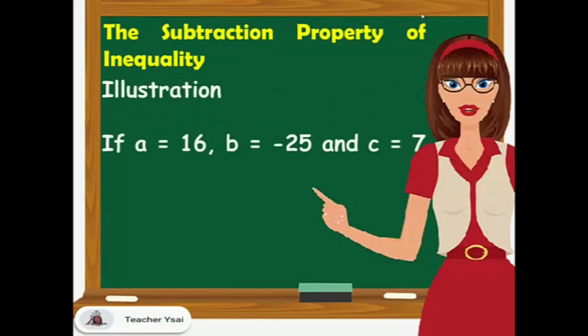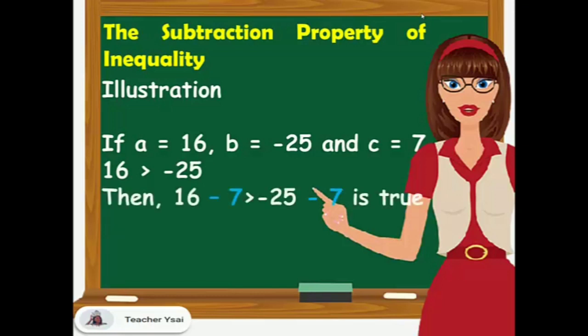For example, if A equals 16, B equals negative 25, and C equals 7, we know that 16 is greater than negative 25. If we subtract 7 from both sides of the inequality, we have 16 minus 7 is greater than negative 25 minus 7, since 16 minus 7 is 9 and negative 25 minus 7 is negative 32, and 9 is greater than negative 32.